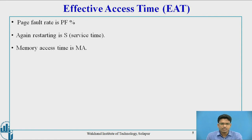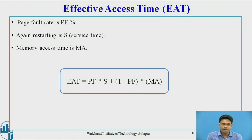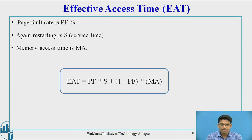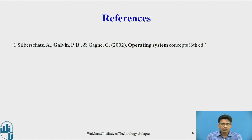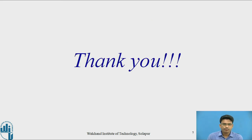If a page fault happens, we need to restart the service and also account for memory access time. The formula is: Effective Access Time = (Page Fault Rate × Service Time) + (1 - Page Fault Rate) × Memory Access Time. These concepts are referenced from Galvin's Operating System Concepts, sixth edition. Thank you.